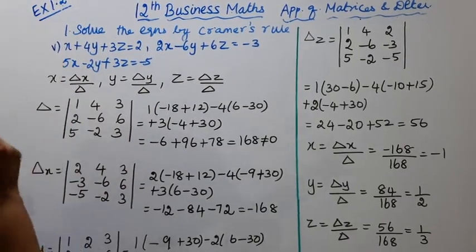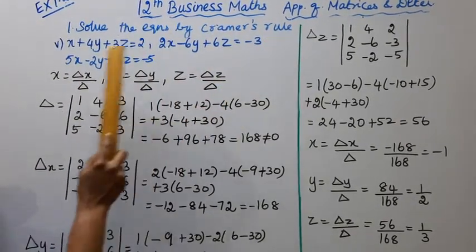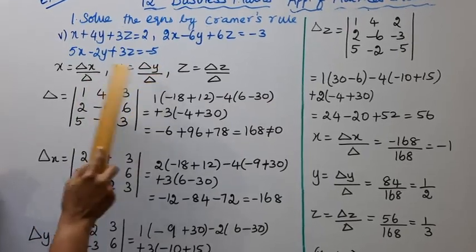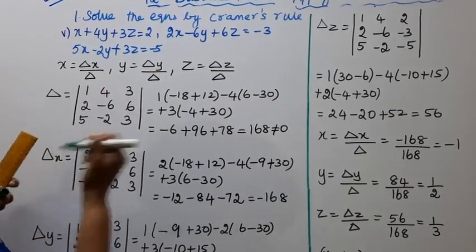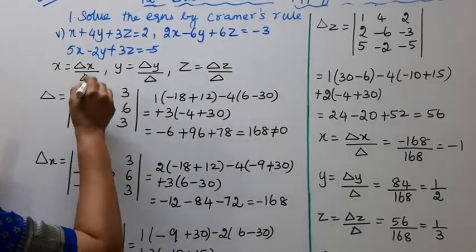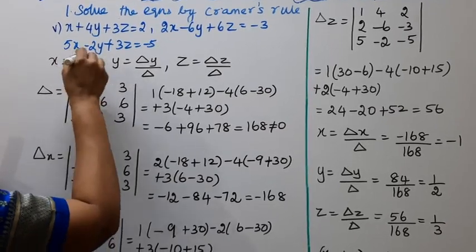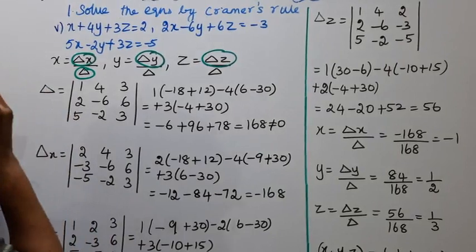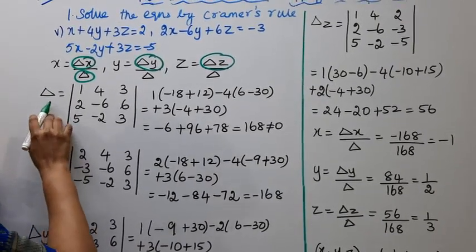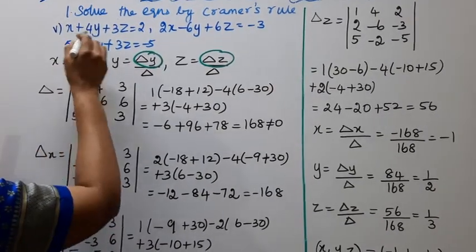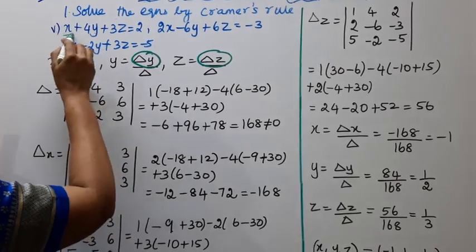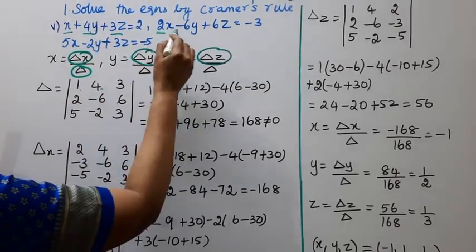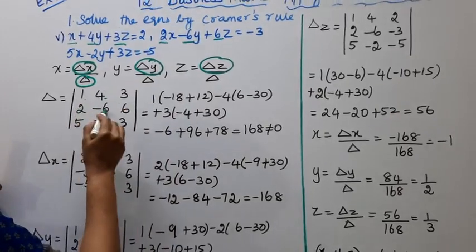By Cramer's rule, x equals delta x by delta, y equals delta y by delta, z equals delta z by delta. So we need to find delta, delta x, delta y, and delta z.